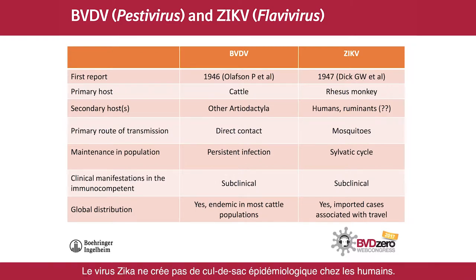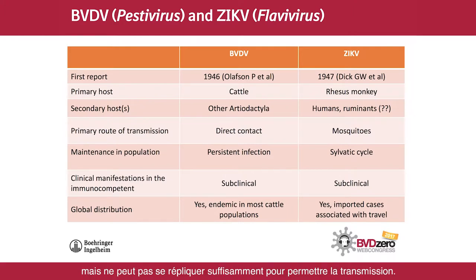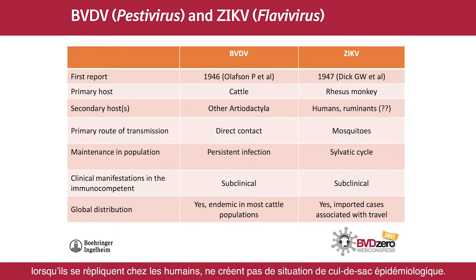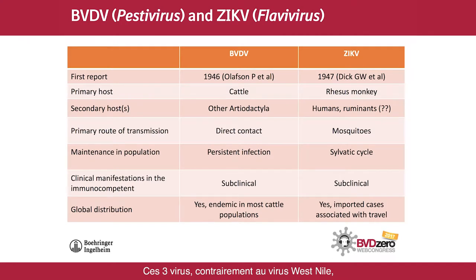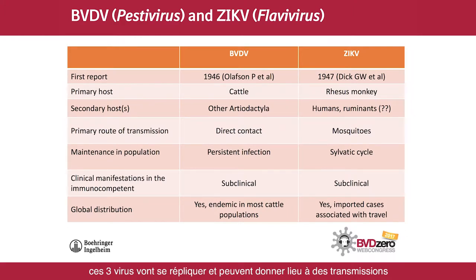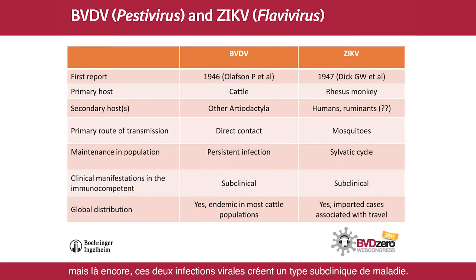Zika virus does not create dead-end hosts in humans. A dead-end host is where a virus enters the host but cannot replicate at a sufficient level to result in transmission. Of the flaviviruses, dengue, yellow fever, and Zika are the only three viruses that do not create a dead-end host situation in humans — as opposed to West Nile virus, where humans are dead-end hosts. Those three viruses will replicate and can result in transmission through mosquitoes to other humans. Both of these viral infections predominantly create a subclinical type of disease.